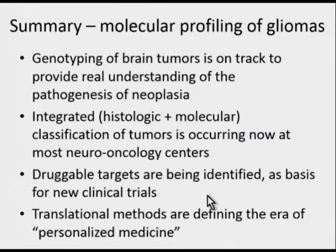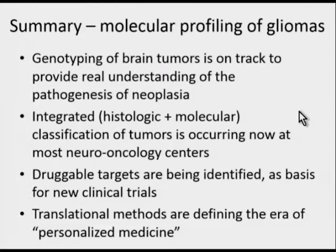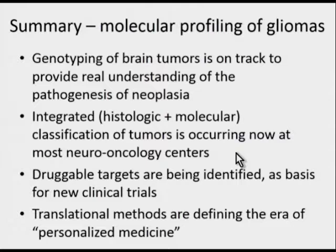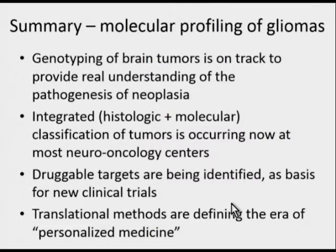To summarize: using molecular profiling, we should eventually have a real understanding of the pathogenesis of neoplasia. We aim for an integrated—histologic and molecular—classification of tumors, with most studies done at larger neuro-oncology centers. The goal is to identify druggable targets, form the basis for new clinical trials, and advance personalized medicine.